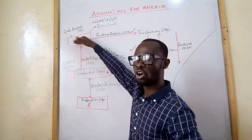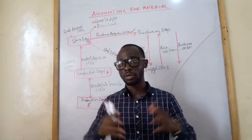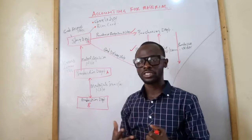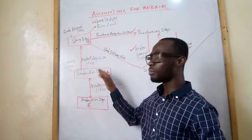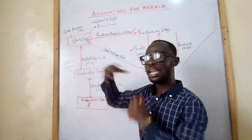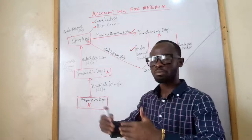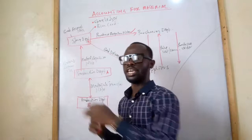Sometimes the production department requests raw material for a planned quantity — say 1,000 bottles of Sobolo — but at the end of the day realizes they cannot produce that amount. Since raw materials cannot be stored at the production department, they must be returned to the store. When materials are returned, they are accompanied by a material retained note — a document prepared by the production department detailing the raw materials being returned to the store.